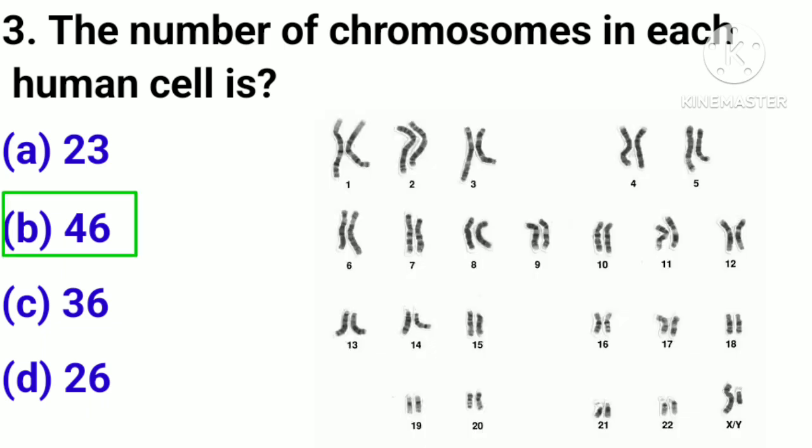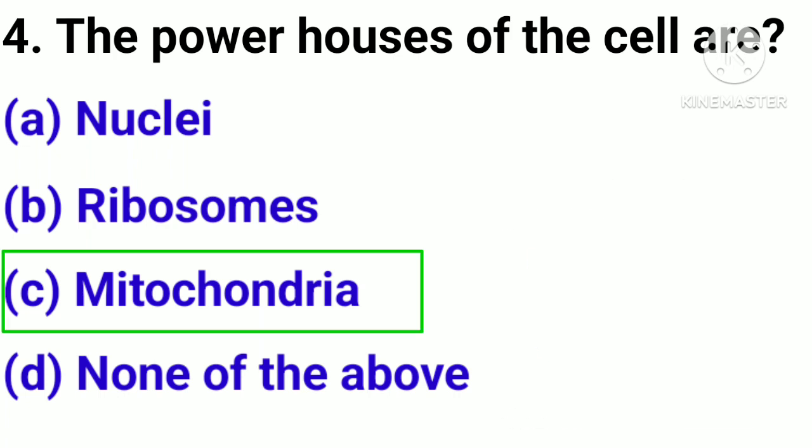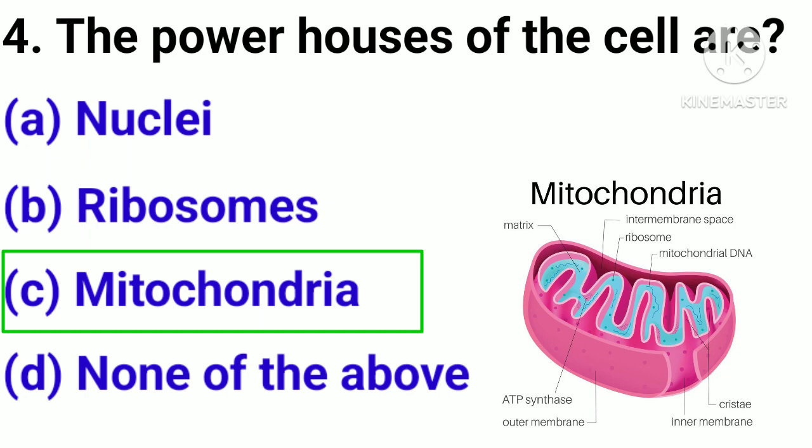Correct answer: option B, 46. Question number 4. The powerhouse of the cell is: option A, Nucleus; option B, Ribosome; option C, Mitochondria; option D, None of the above.